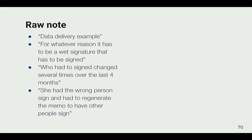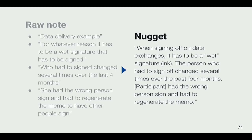Here's an example of what a nugget is. This is directly copied from the stream-of-consciousness notes: 'Data delivery example — it has to be a wet signature that has to be signed. Who had signed changed several times over the last four months. She had the wrong person.' That's not super usable by itself. We translated that into a nugget — a standalone piece of prose: 'When signing off on data exchanges, it has to be a wet signature, meaning ink on paper. The person who had to sign off changed several times over the past four months, and the participant had the wrong person sign and had to regenerate the memo.' We created a couple hundred of those based on our thousands of notes.